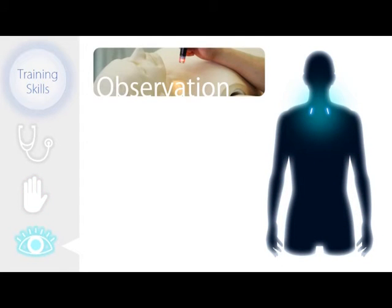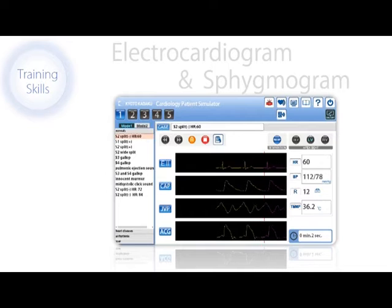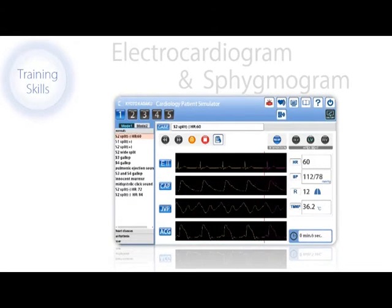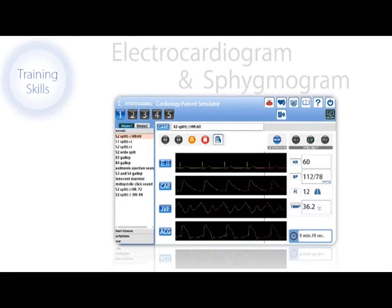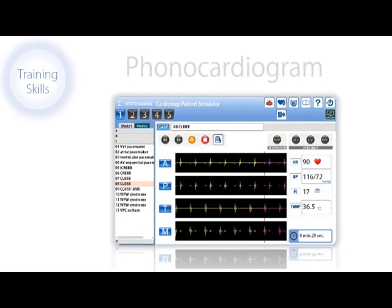A replication of the jugular venous wave movements also creates a realistic training session. The electrocardiogram and sphygmogram are displayed on the provided tablet and main screen with easy-to-read visuals and operation buttons. The display can also be changed to the patient's phonocardiogram to visually track the heartbeat condition of each patient case.